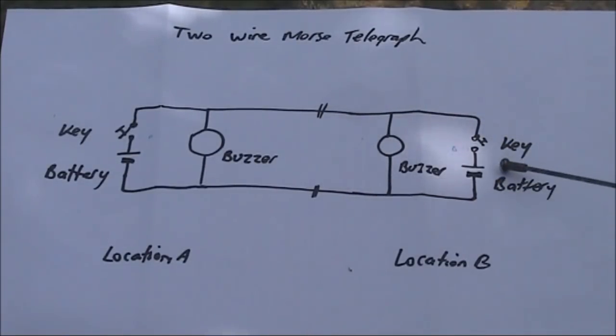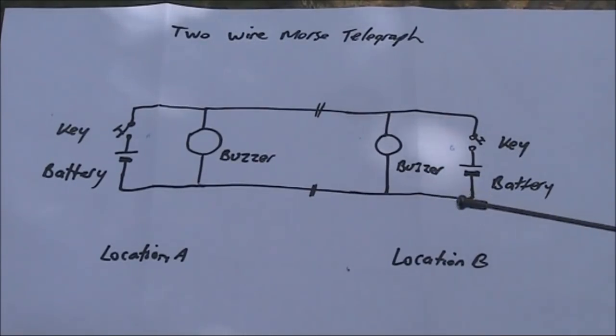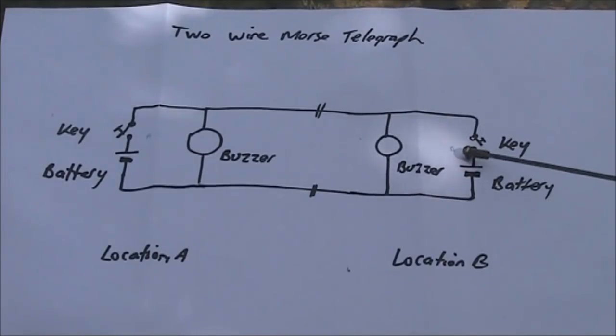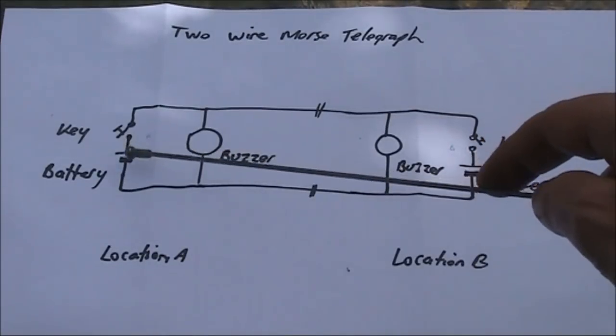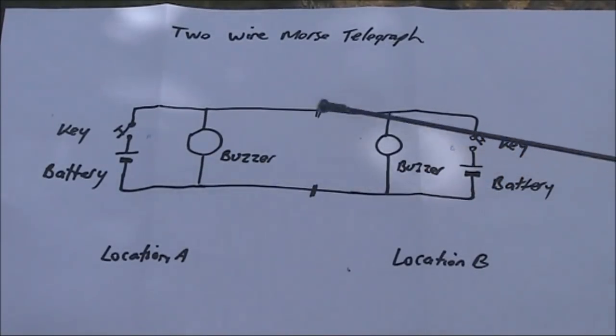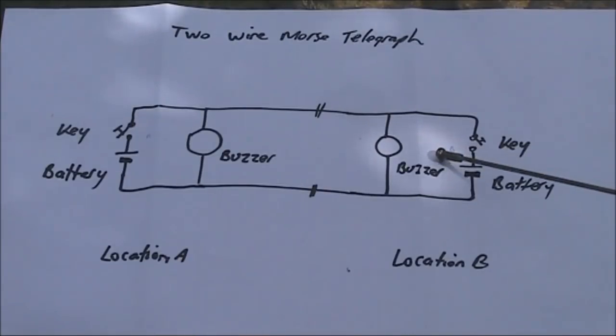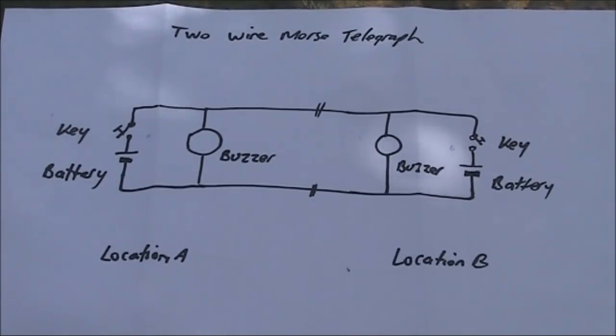That's fine if you're happy to have a separate battery for each station. Or, if you didn't want that, you could take out one of these batteries and have a third wire connecting this point to this point. So then this station with the battery becomes the master, and this, without the battery, becomes the slave. A bit like the older type of intercom systems you used to see.